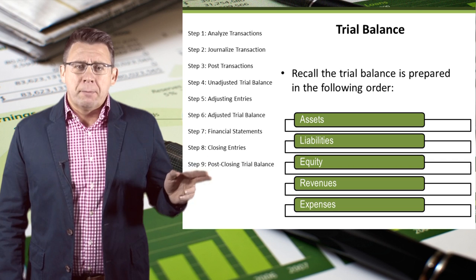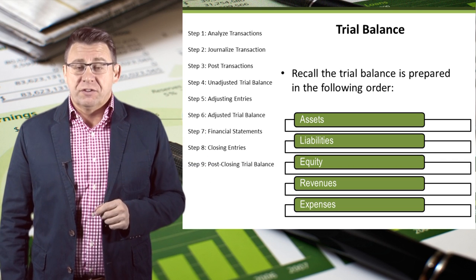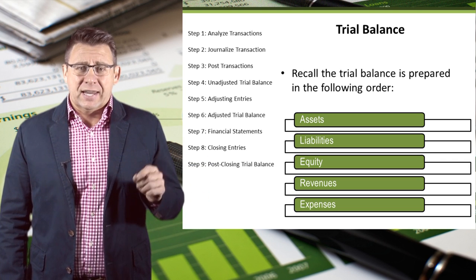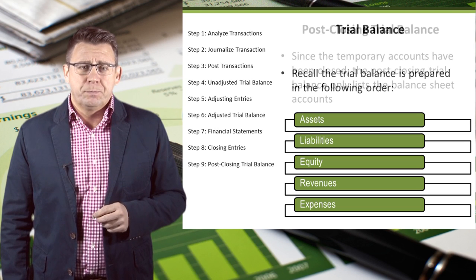Let's remember that the trial balance lists accounts in the following order: assets, liabilities, equities, revenues, and expenses.